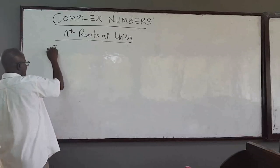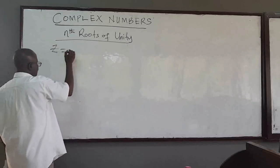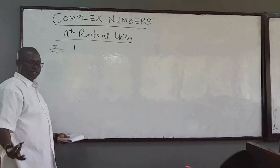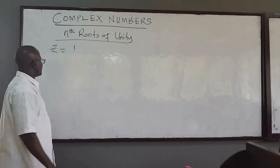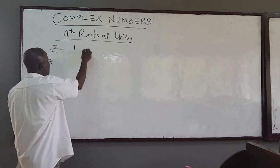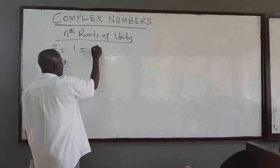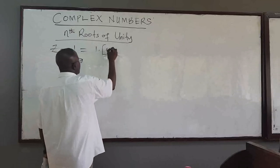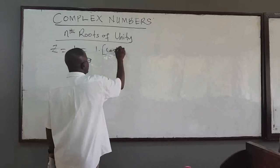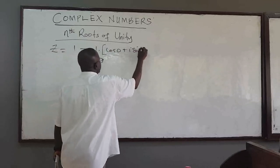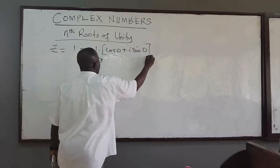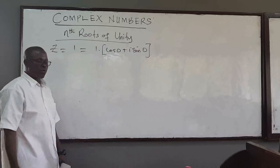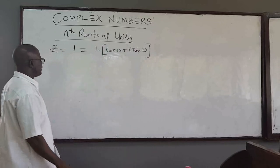Unity again is one. So this simply means the complex number is the number one, which can be written as one multiplied by cosine of zero plus i sine of zero. So the argument is zero and the modulus is one.